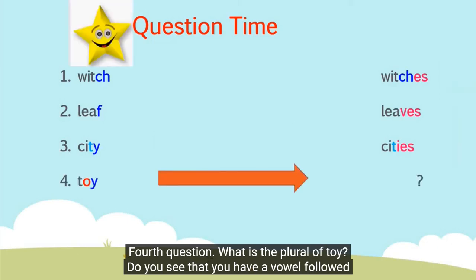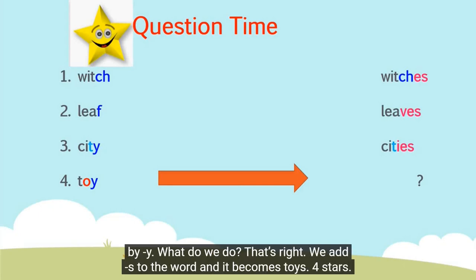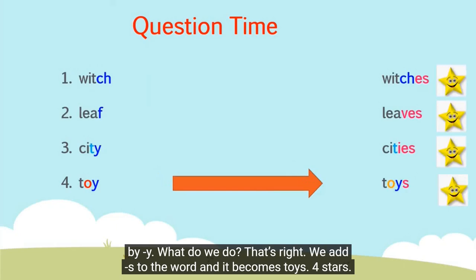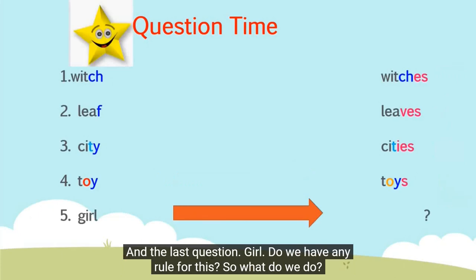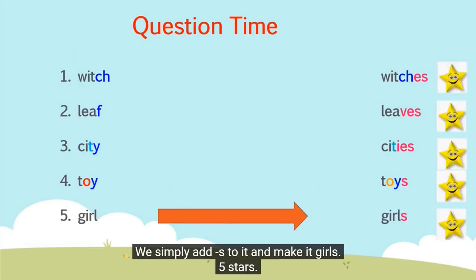Fourth question: what is the plural of toy? You have a vowel followed by Y — what do we do? That's right — we add S to the word and it becomes toys. Four stars! And the last question: girl. Do we have any rule for this? No. So what do we do? We simply add S to it and make it girls. Five stars!